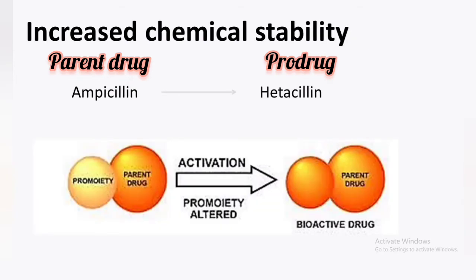Several physiological conditions cause chemical instability. To increase chemical stability, drugs can also be converted to their Pro-drug form. For example, Ampicillin, which is unstable in different physiological conditions, is converted to Hetacillin, which is more stable than Ampicillin.